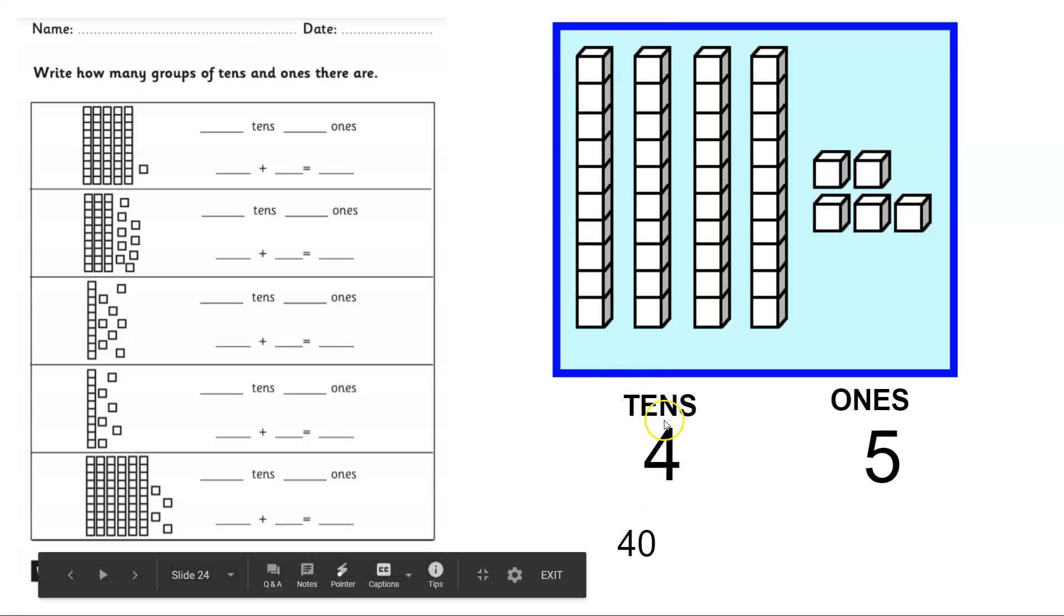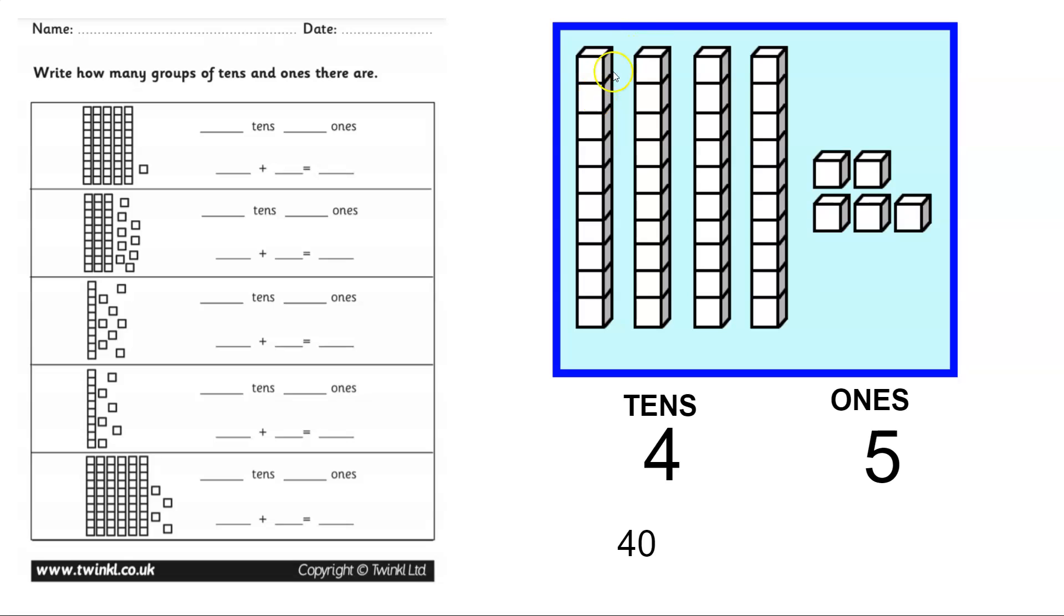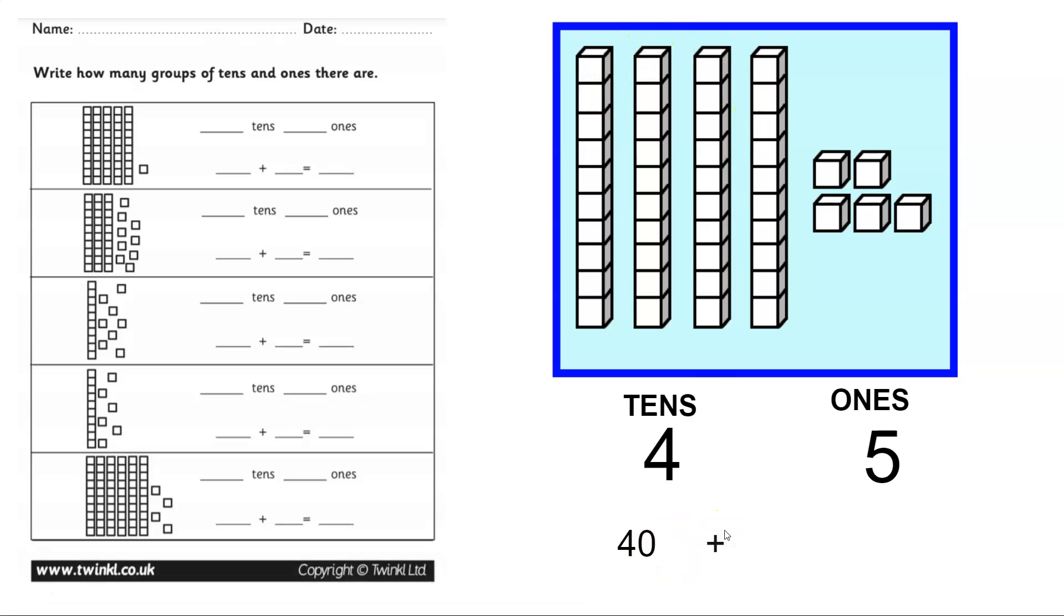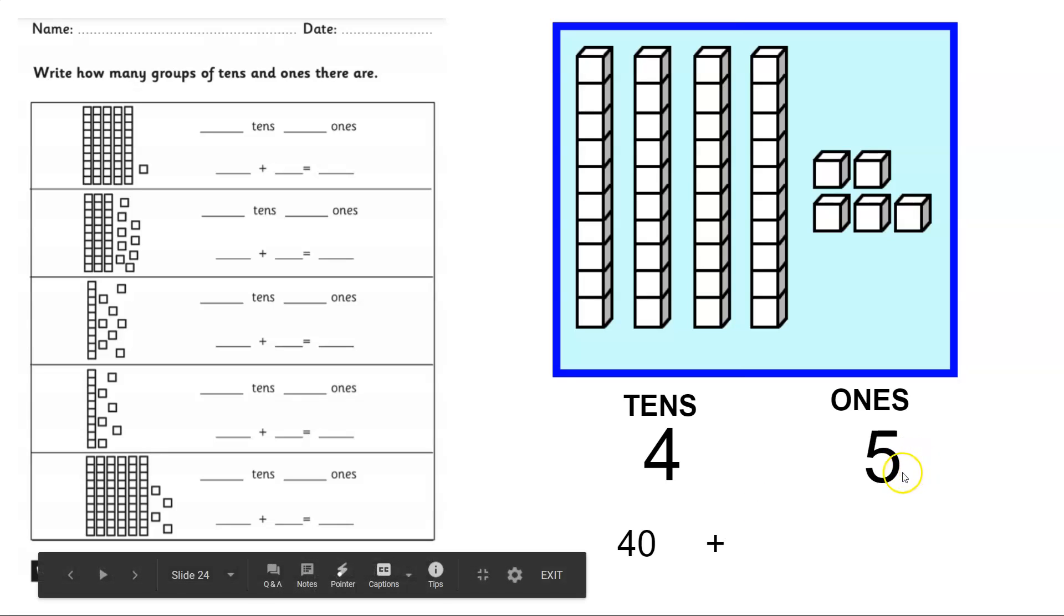We have four groups of tens, but the total amount is 40. And we are going to add the ones, which is five.